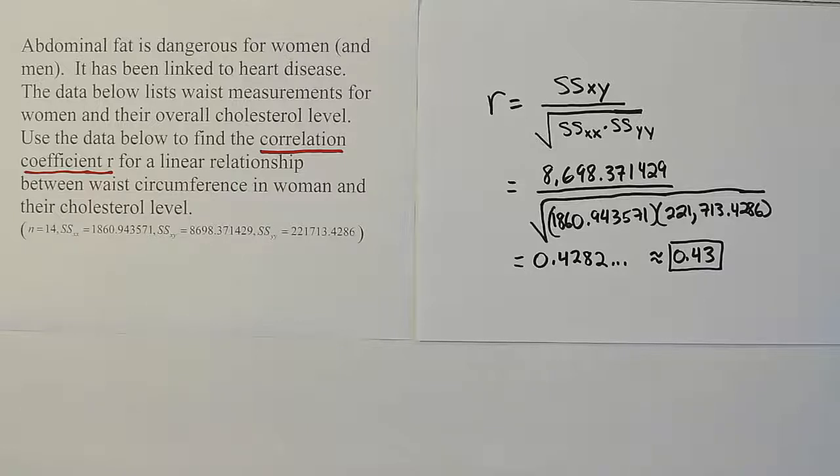On the other side, if it's negative, it just expresses a negative linear relationship. So a very strong negative linear relationship is minus 0.999, that sort of thing. And a very weak negative linear relationship might be minus 0.003 or something like that.